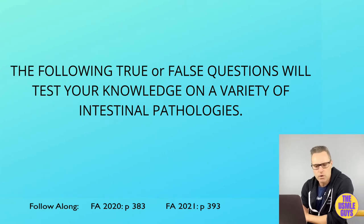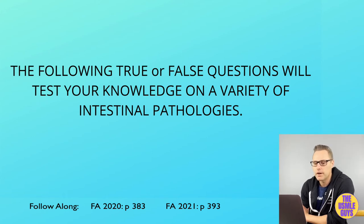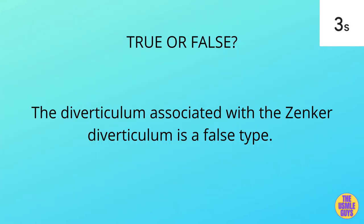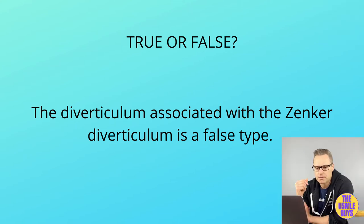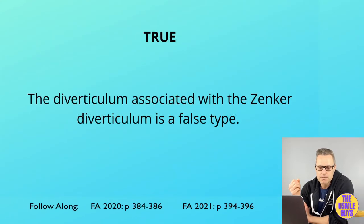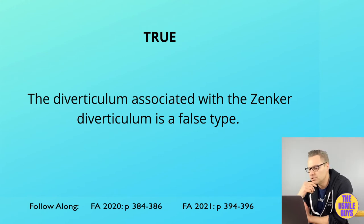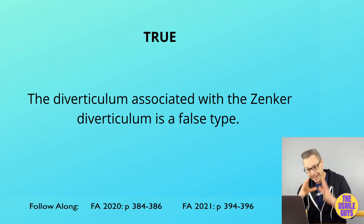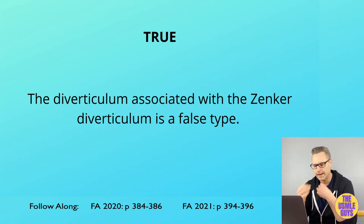Now we have true/false questions on intestinal pathologies. The first statement is true: Zenker's diverticulum is a false pharyngoesophageal diverticulum precipitated by esophageal dysmotility, causing herniation of mucosal tissue between the thyropharyngeal and cricopharyngeal parts of the inferior pharyngeal constrictor in an area known as Killian's triangle.